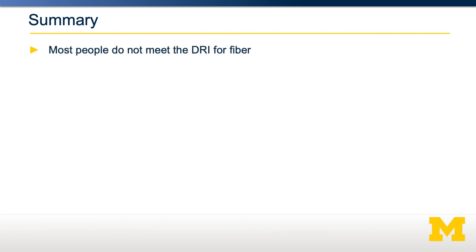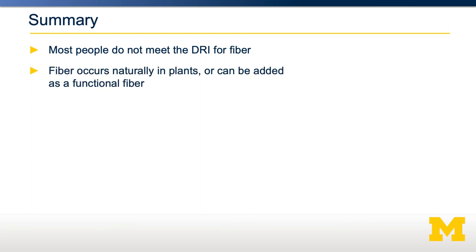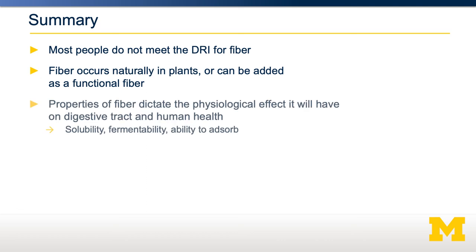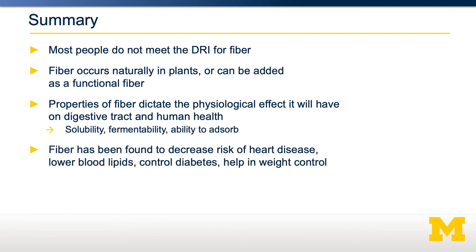In summary, fiber is an important part of human health, but most people do not meet the recommended daily intake. Fiber occurs naturally in plants but can also be added as a functional fiber to certain foods. The specific properties of a particular type of fiber — its solubility, fermentability, and the particular chemicals it can adsorb to its surface — dictate the physiological effects it will have. Broadly, fiber has been found to decrease the risk of heart disease, reduce blood lipids, help control diabetes, and help in weight management. Fibers are a very diverse set of chemicals, and it's important to think more deeply about how different fibers can have different effects on our bodies.